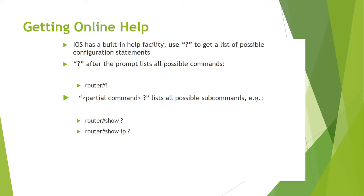The '?' after the prompt lists all possible commands. Router# partial command '?' lists all possible subcommands. For example: Router# show ?, Router# show ip ?.